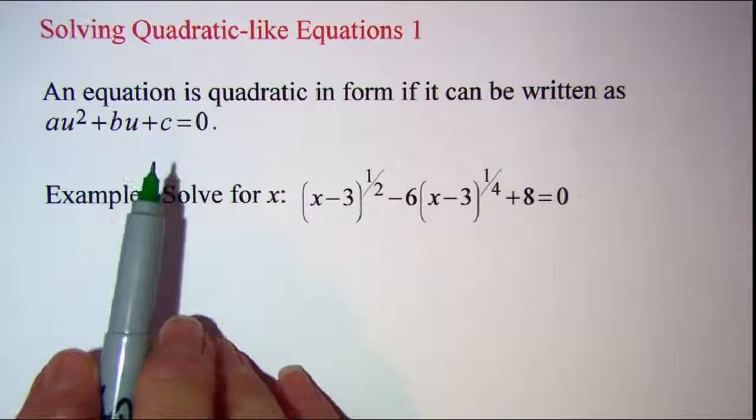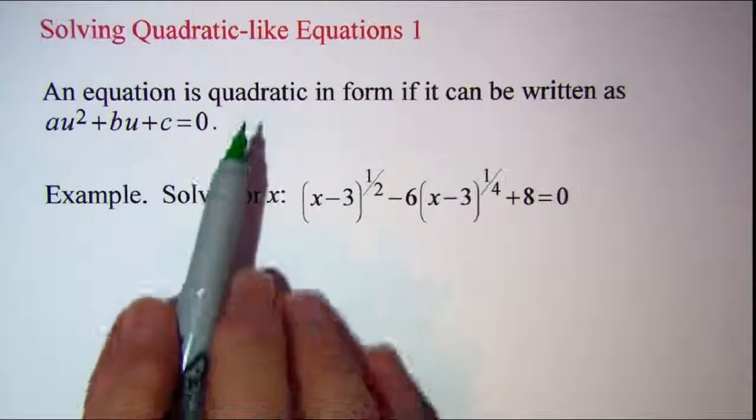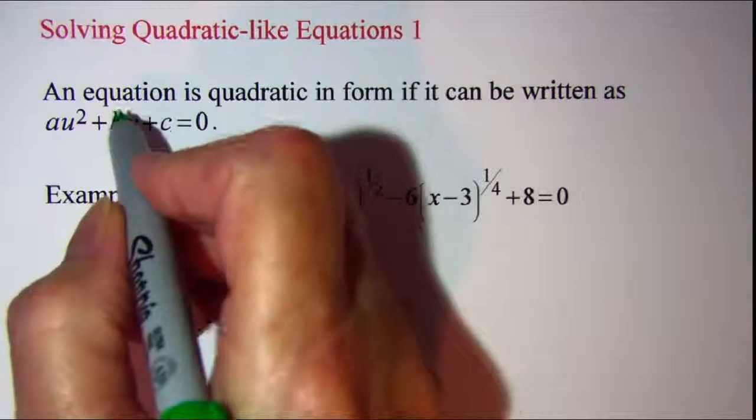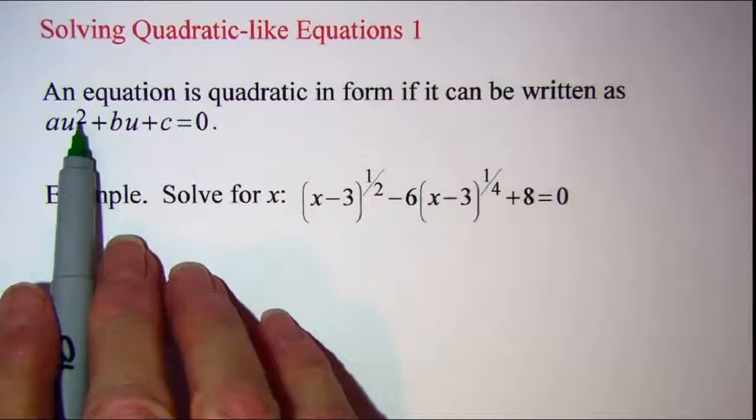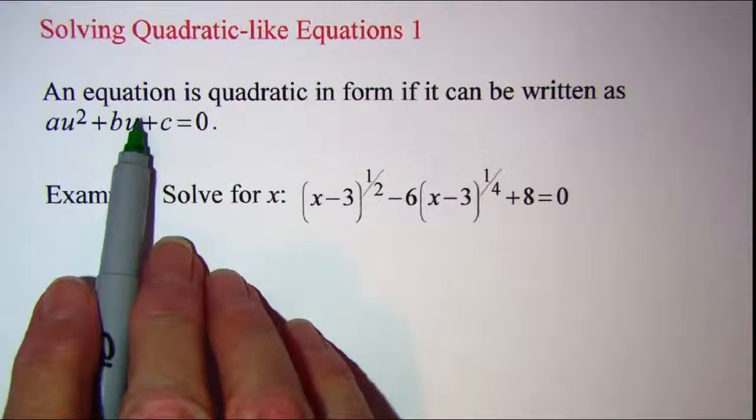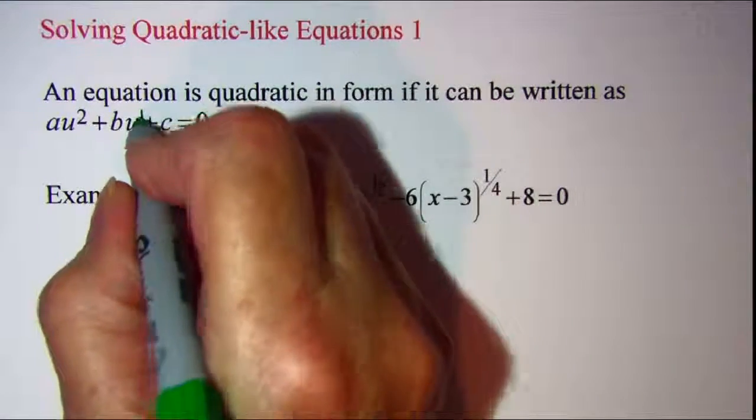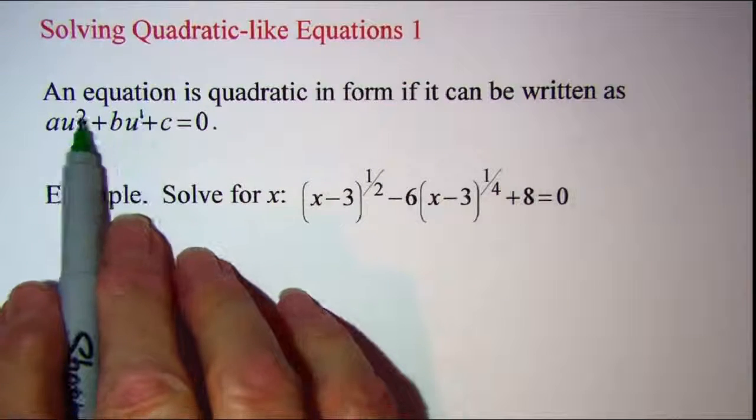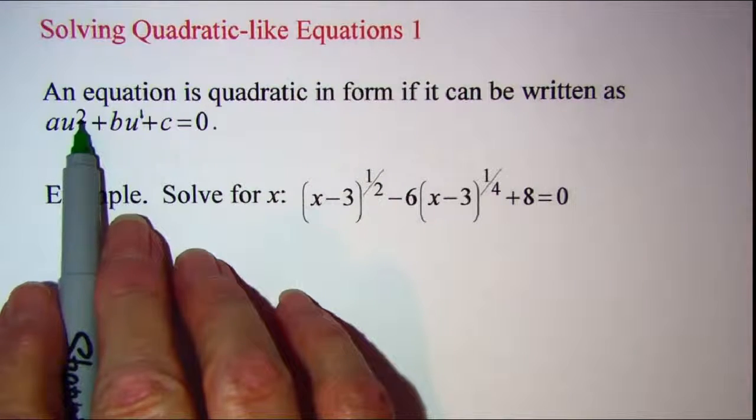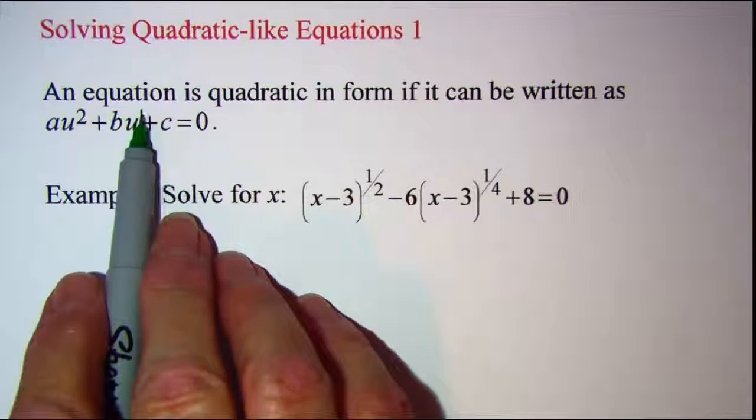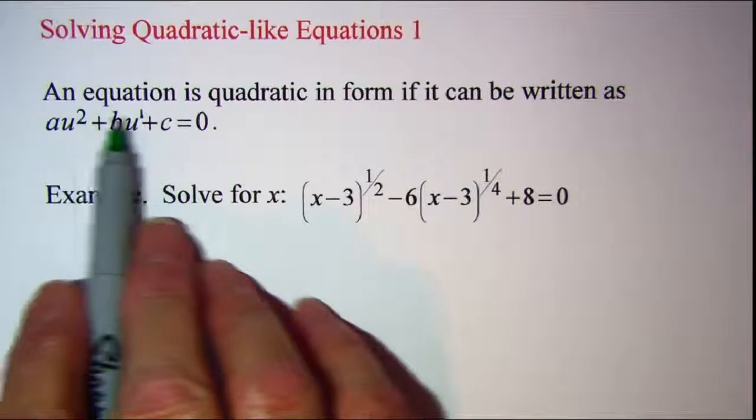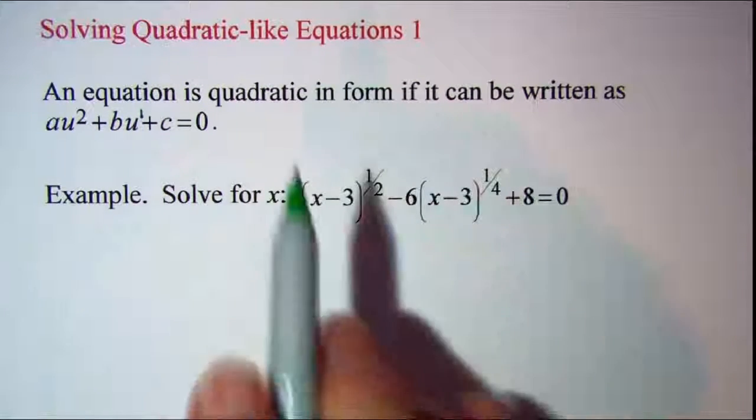Now you can determine if you have an equation that's quadratic in form if you look at the highest power and then the next highest power. Notice this exponent is one here. If this highest power is two times as much as this one, then you have an equation that's quadratic in form.